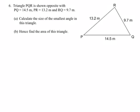Question number six. Triangle PQR is shown opposite with PQ 14.5 metres, PR 13.2 metres and RQ 9.7 metres.